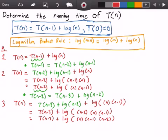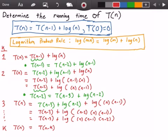Now I can see a pattern. Continuing iterations down to the kth iteration, T of n equals T of n minus k. This is because when k equals 1 we had T of n minus 1, when k equals 2 we had T of n minus 2, and when k equals 3 we had T of n minus 3. So at the kth iteration we get T of n minus k.